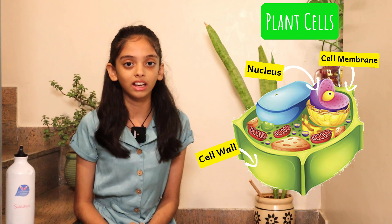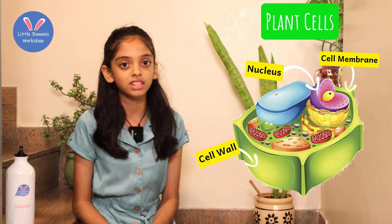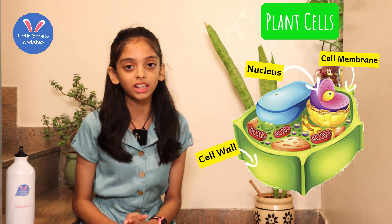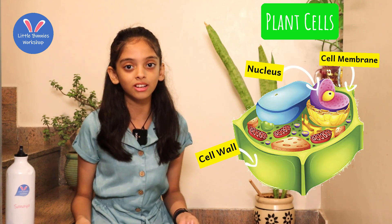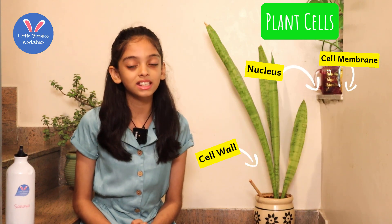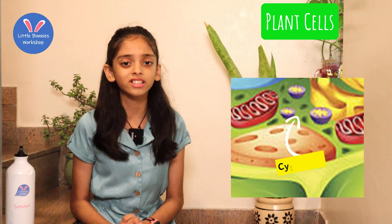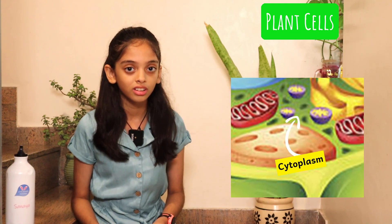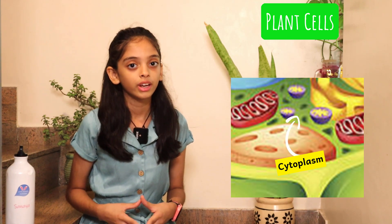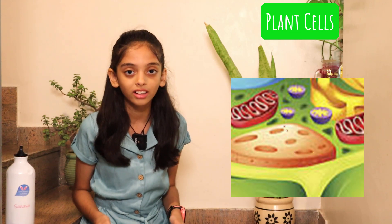The next one is the nucleus. The nucleus controls all activities of the cell — you can consider it like the brain; it's the brain of the cell. Next up is the cytoplasm. The cytoplasm is a clear, jelly-like structure. This is where chemical reactions occur. If there were no chemical reactions, the cell would die.